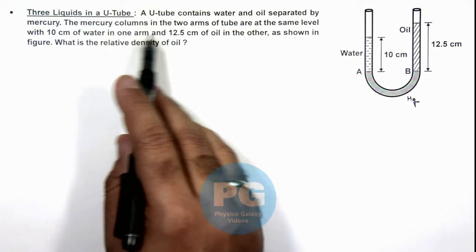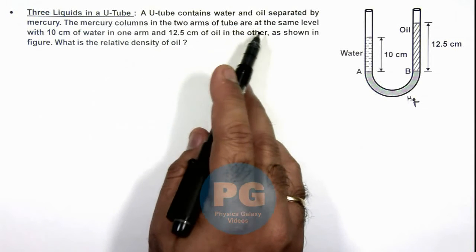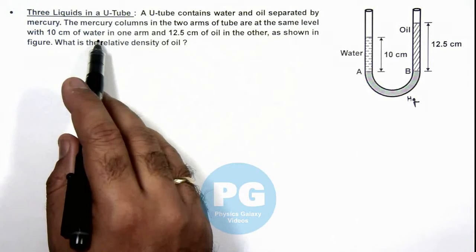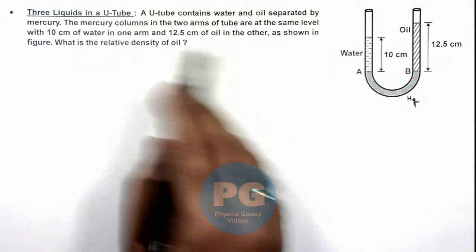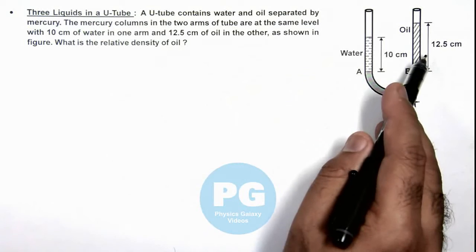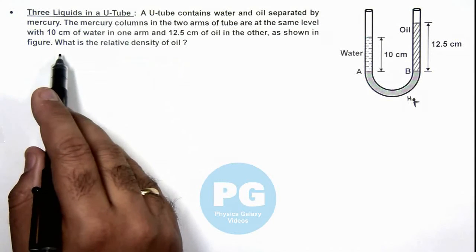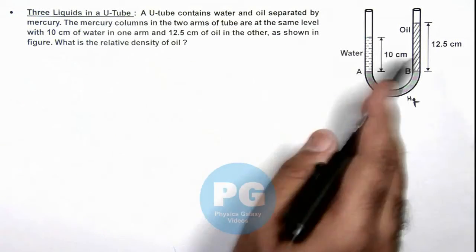And the mercury columns in the 2 arms of tube are at the same level with 10 centimeter of water in 1 arm and 12.5 centimeter of oil in the other. As shown in figure, we are required to find the relative density of oil.